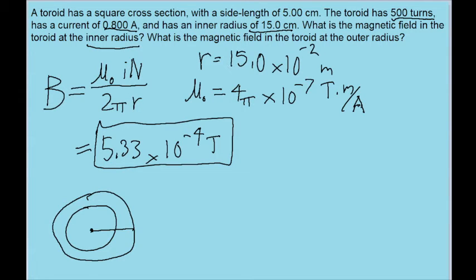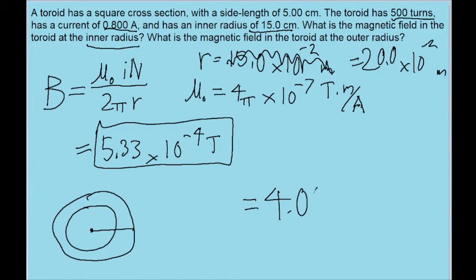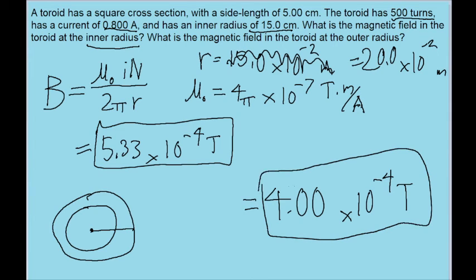So we'll just want to do exactly what we just did, except instead of using 15 times 10 to the negative 2 meters for r, we'll use 20 times 10 to the negative 2 meters. And if we do that, then we find a magnetic field of about 4 times 10 to the power of negative 4 teslas. So that is the magnetic field for the outer radius, which answers both parts of the problem.